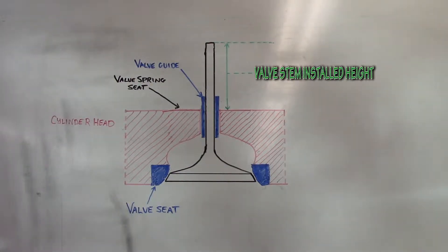Valve stem installed height refers to a dimension measured from the surface of the valve spring seat to the valve tip when the valve is fully closed.